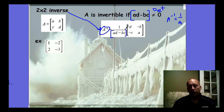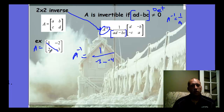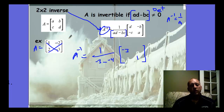So we follow this formula: 1 divided by the determinant, multiplied by a new matrix where the downward diagonal's positions have switched and the upward diagonal has become opposite. Taking this 2 by 2 example, the inverse of A is 1 over the determinant — so the downward diagonal, negative 3, minus the upward diagonal, negative 4. Be careful with your signs. The downward diagonal flips spots, becoming negative 3 and 1. The upward diagonal just becomes opposite: this one becomes negative 2, this one becomes positive 2 — we're just changing the sign.